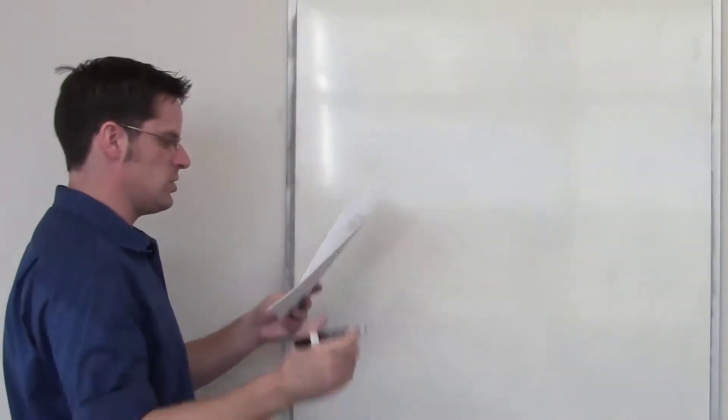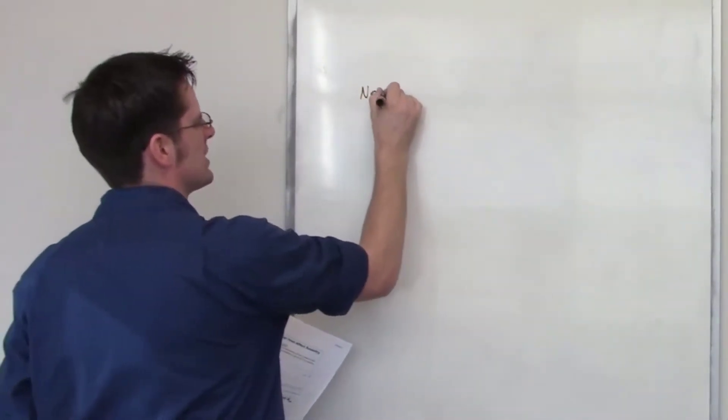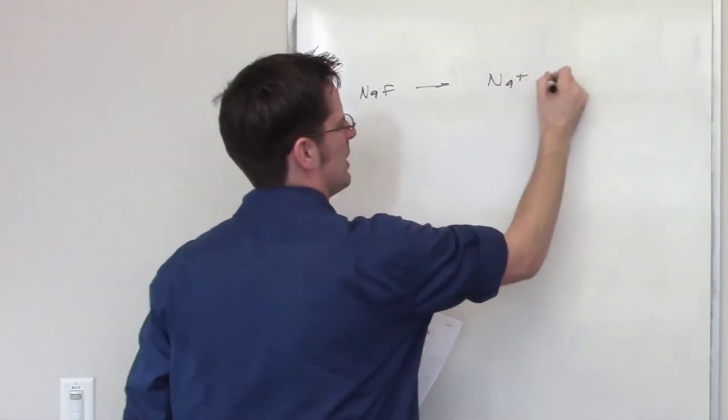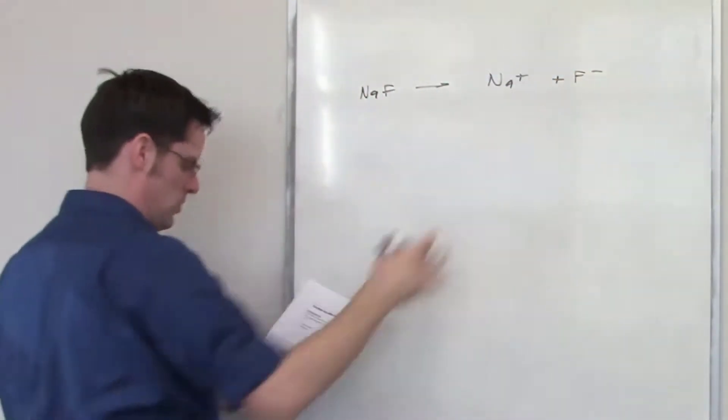In this question, I've got a solution of sodium fluoride. It, of course, is a strong electrolyte, which means it will dissociate completely to yield sodium plus and fluoride minus in a 1 to 1 ratio.